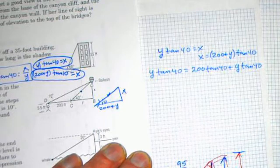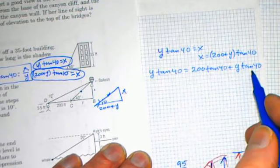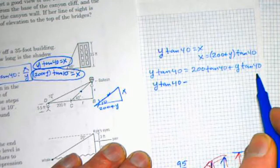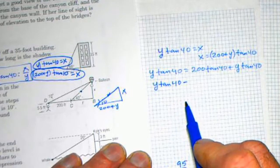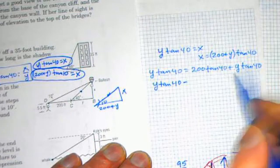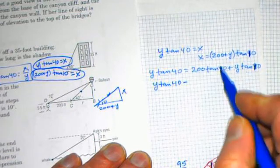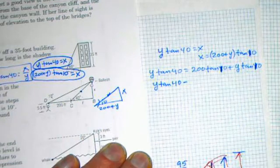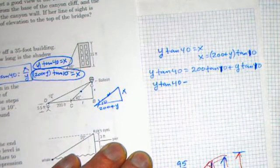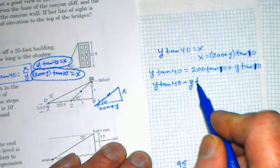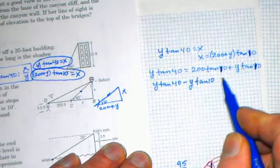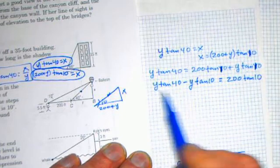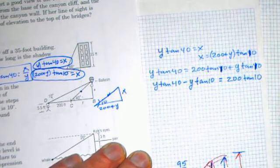I'm going to subtract y tan 10 from both sides. And that's going to be equal to 200 tan 10. So y tan 40 minus y tan 10 equals 200 times tan 10.